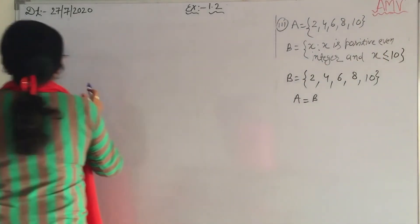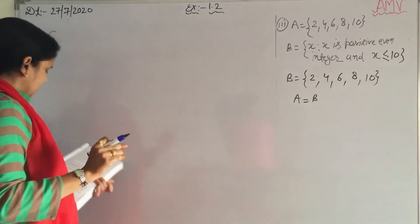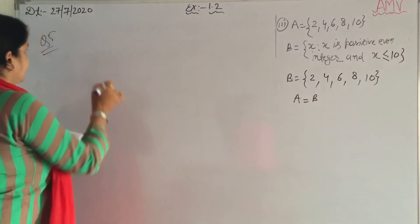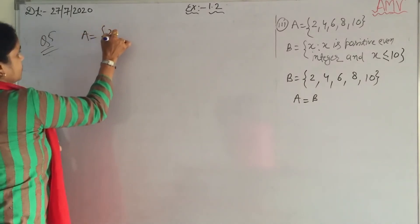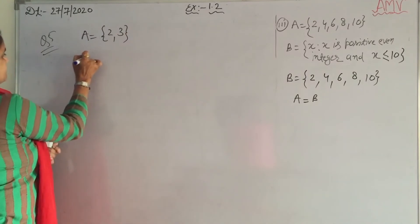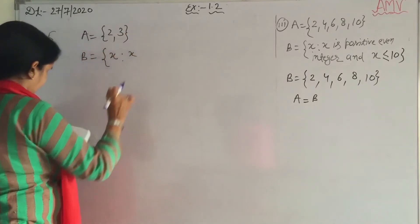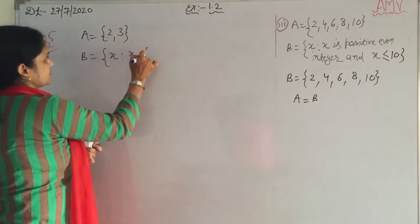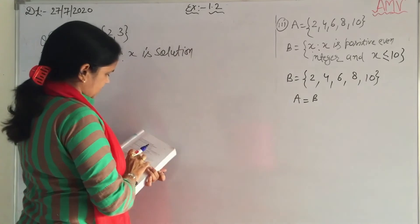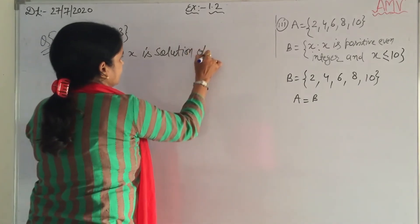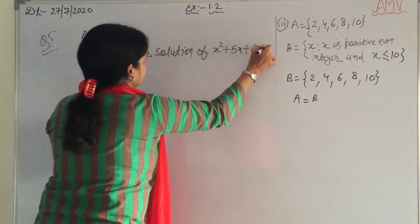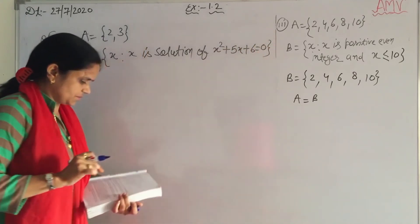Question 5: are the following pairs of sets equal? First part: A = {2, 3} and B = {x : x is a solution of x² + 5x + 6 = 0}. First, write B in listing form.